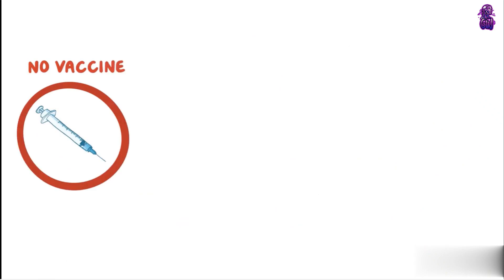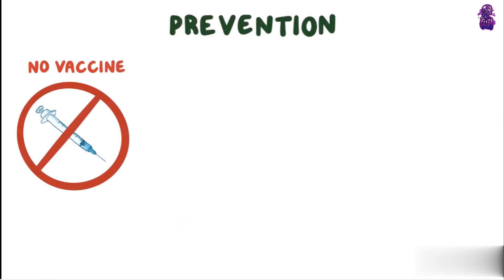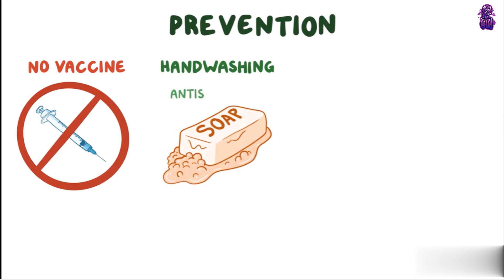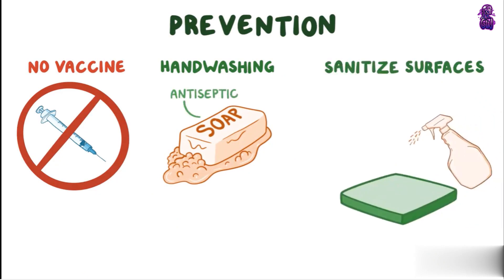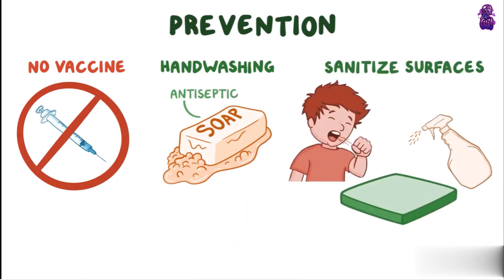Finally, there's no vaccine for Parvovirus B19. Preventative measures include proper hand washing with antiseptic soap and water, and sanitizing surfaces that would have come into contact with respiratory droplets, since the virus can survive on surfaces.